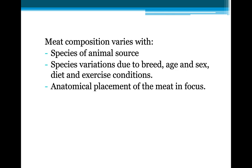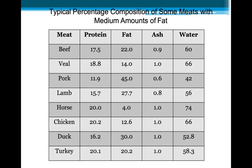Meat composition varies with the species of the animal. Species variation is due to breed, age, sex, diet, and exercise condition, as well as the anatomical placement of the meat. Here, a typical percentage composition of some meats with a medium amount of fat is shown.